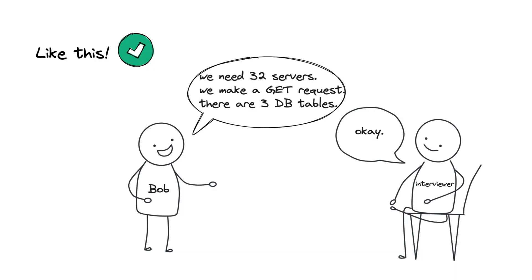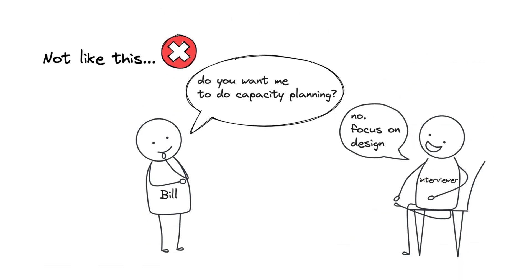Bob loved to do capacity planning and did it without checking with the interviewer. Besides, he didn't ask whether API and database schema design was necessary. But Bill checked with the interviewer whether there was a need for capacity planning. This helped to save time and focus on important things.